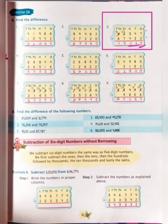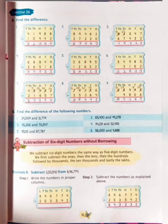So we will borrow from the 10,000's place. You can cut here 8 and write here 7, and here we will get 12. Now 12 minus 7 is equal to 5. And finally, 7 minus 6 is equal to 1. So our answer is 15,115.